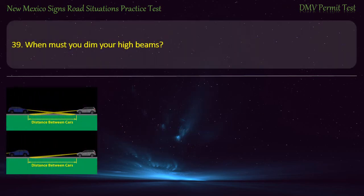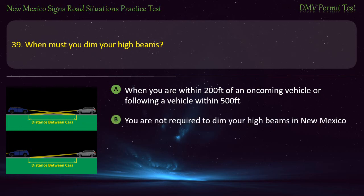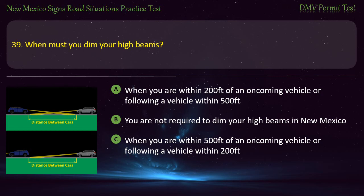Question 39. When must you dim your high beams? Options: When you are within 200 feet of an oncoming vehicle or following a vehicle within 500 feet; or you are not required to dim your high beams in New Mexico.